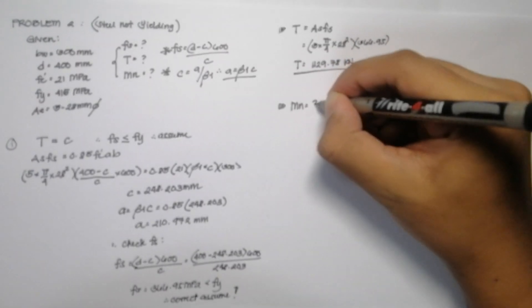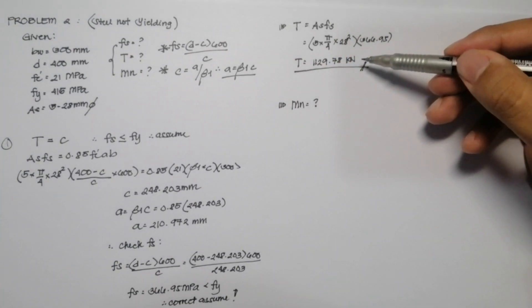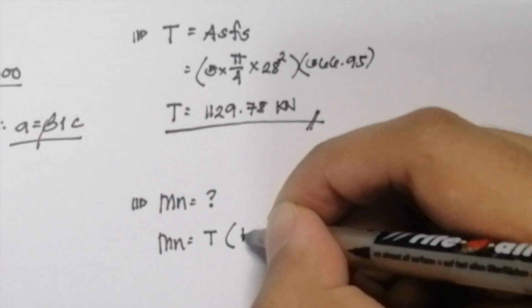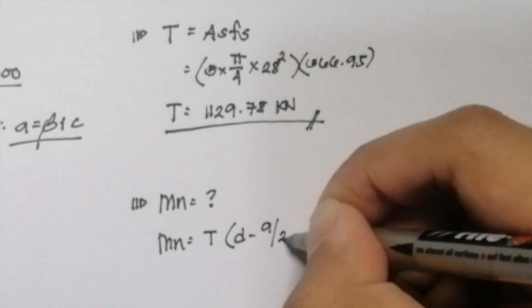The third question is the nominal moment in the beam. So in this problem, I will use the tensile force in which Mn is equal to T multiplied by (D minus A over 2).